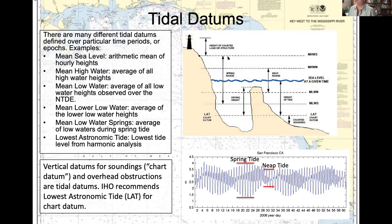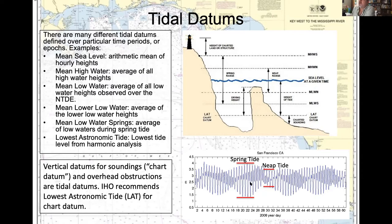Tidal datum stages include mean high water springs, mean high water neap, mean low water neap, mean low water springs, and the lowest astronomic tide — the chart datum recommended by the IHO. A 60-day tidal record from San Francisco shows a mixed semi-diurnal tide with two highs and two lows per day. Spring tides have a larger range and occur when the sun, moon, and earth are approximately aligned; neap tides have a smaller range when they form approximately a right angle.